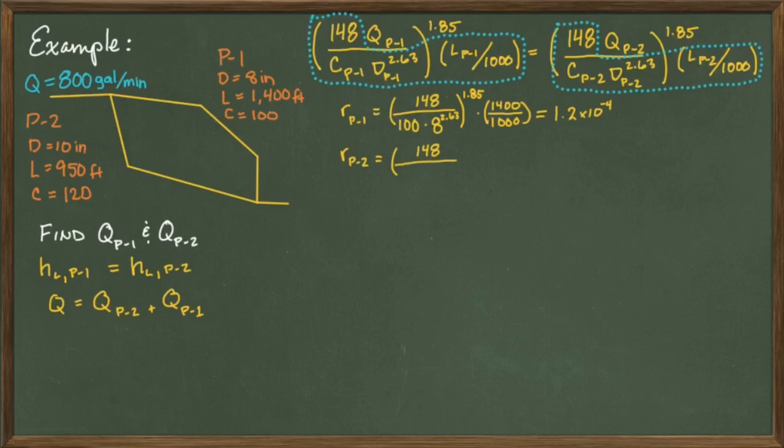We do this again for pipe number 2 and insert the specific values as 148 divided by 120 times 10 to the 2.63, that quantity to the 1.85 power, times the length 950 divided by 1000. I compute this as 1.9 times 10 to the minus 5th. And I can rewrite that as 0.19 times 10 to the minus 4th, so that it matches up with the value that we got for pipe 1 a little better.